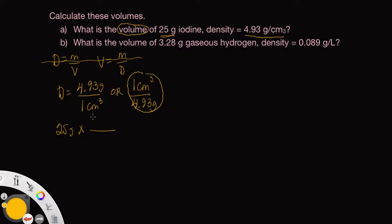So on this fraction bar, let's write our conversion factor, 1 cubic centimeter over 4.93 grams, and the grams just simply cancels, and we determine what this is and get our answer.